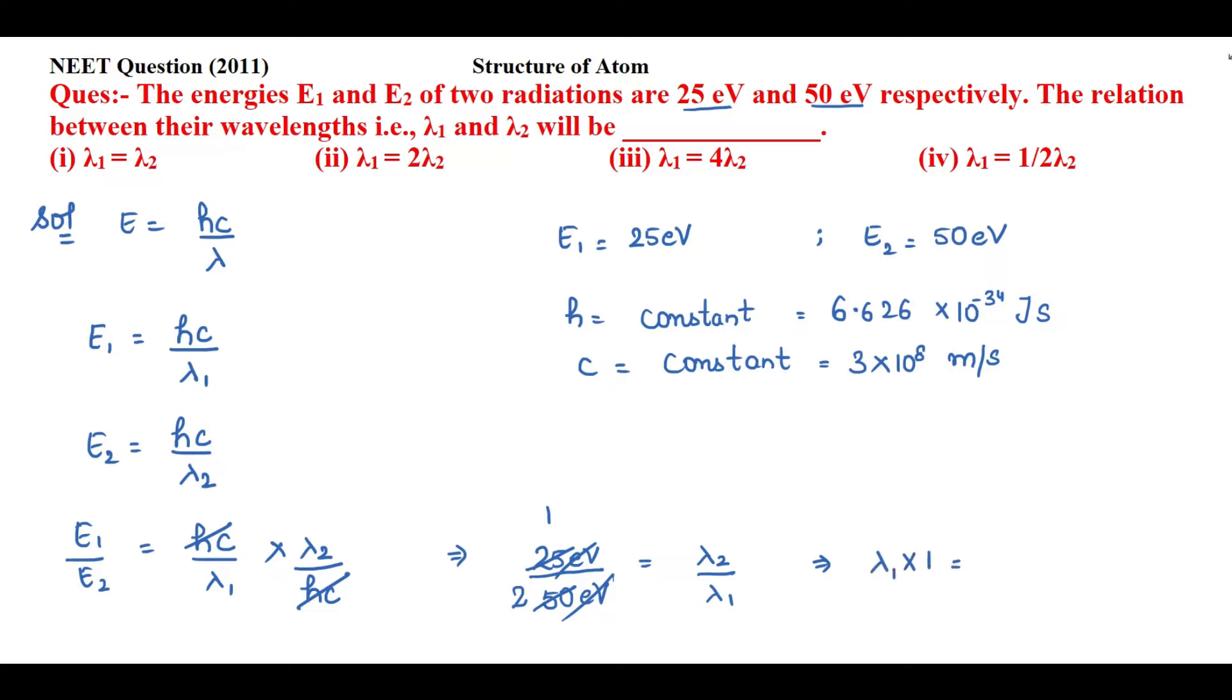λ₁ × 1 equals 2 × λ₂. λ₁ × 1 is λ₁, and 2 × λ₂ is twice of λ₂. So according to that, the second option is the correct option: λ₁ is twice of λ₂.